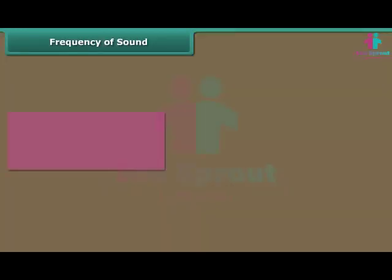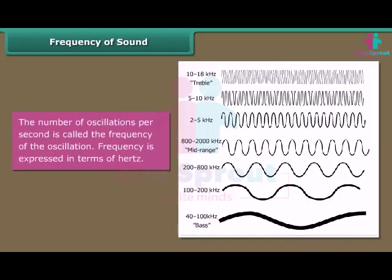Frequency of sound: the number of oscillations per second is called the frequency of the oscillation. Frequency is expressed in terms of hertz.